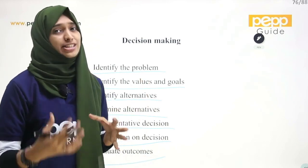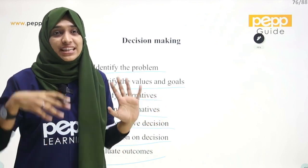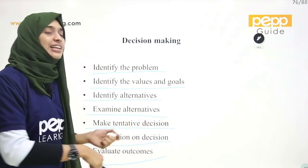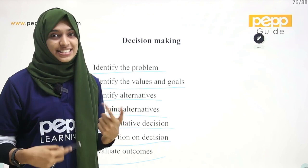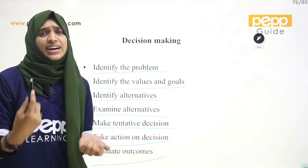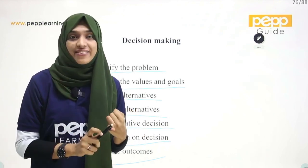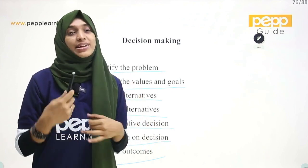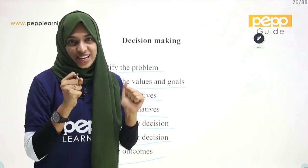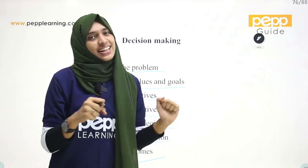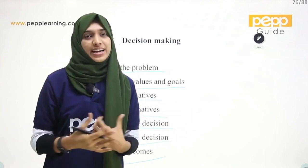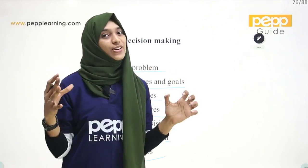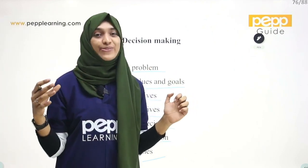We need to examine different methods. The action that we seek, we will evaluate — what benefits are there, what negatives are there. Then we are taking the decision. That is how we describe decision making. Thank you so much.